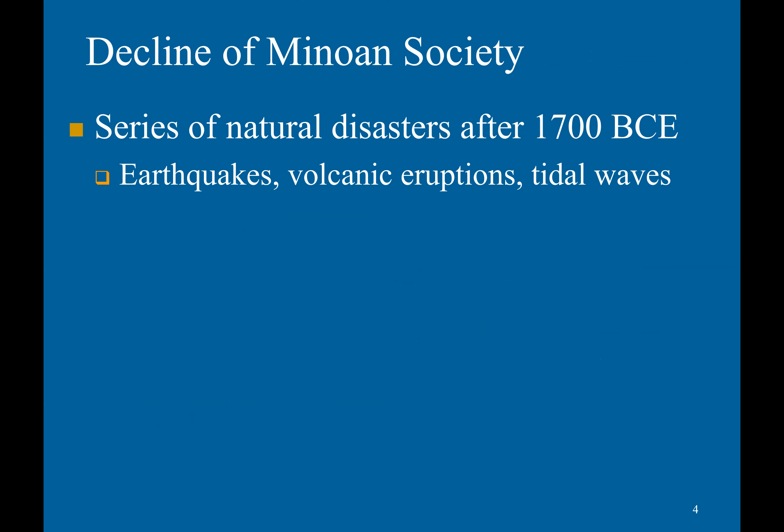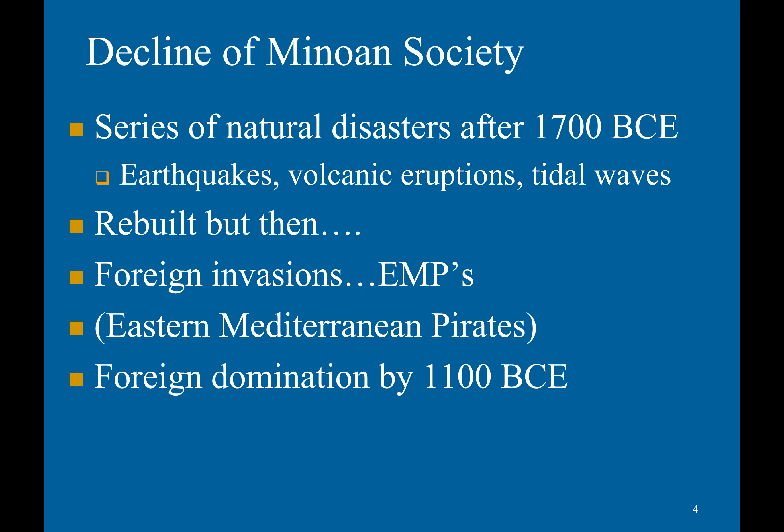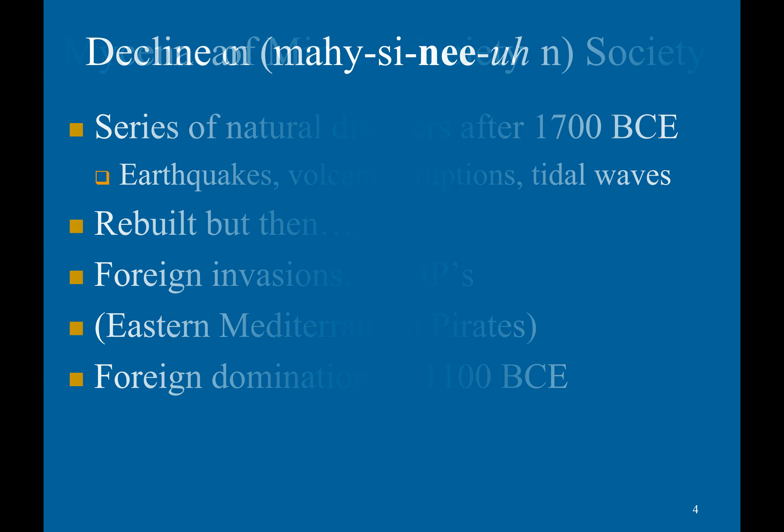A series of natural disasters after 1100 BCE — such as earthquakes, volcanic eruptions, and tidal waves — crippled Minoan society. The society was rebuilt, but then foreign invasions by Eastern Mediterranean pirates came along and destroyed it, with foreign domination occurring by 1100 BCE.